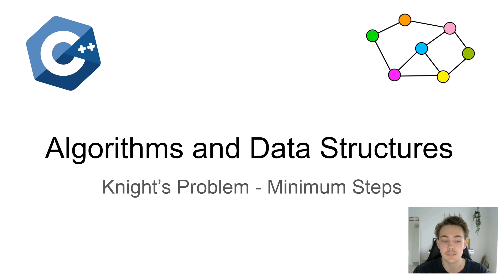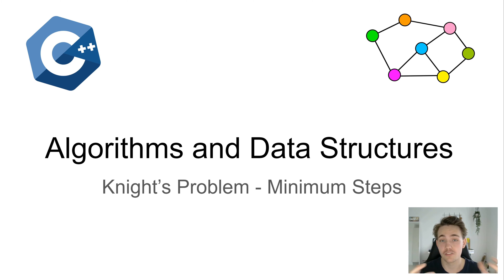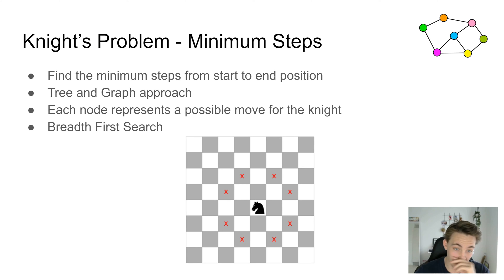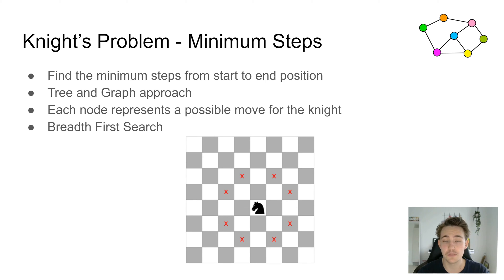In this example we're going to implement a nice problem where we're going to find the minimum steps for a knight on a chessboard. We have this knight that can move around in some different possible moves on a chessboard. We're going to implement a chessboard that has an arbitrary size, place the knight at some point, and then find the minimum steps to reach an end goal.